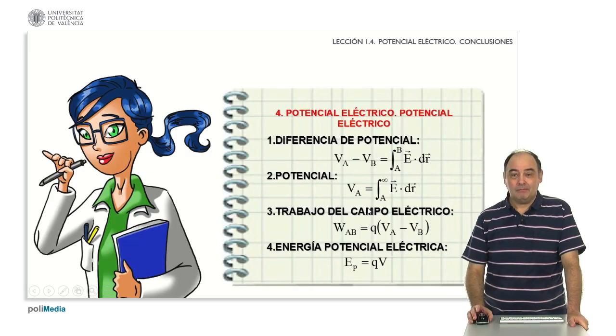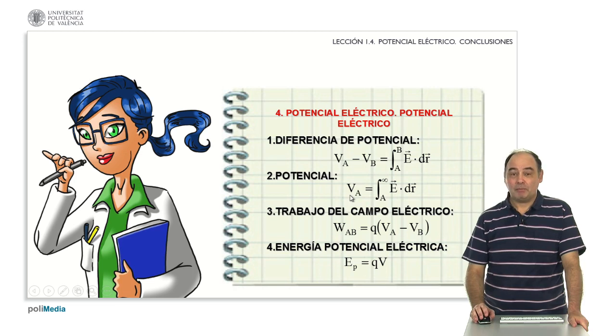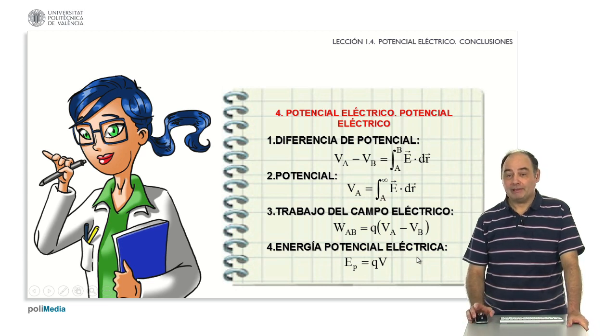Well, with this, we can go on to summarize what we've seen today. First, that the potential difference by definition is the integral that appears here. Remember also the order. Note that it is lower minus upper. Second, that the potential at any point is calculated by this integral taking infinity as a reference. Third, the deduced expression of the electric field work as product of charge by potential difference. And fourth, what is the electric potential energy: product of charge by potential. Thank you very much for your attention.